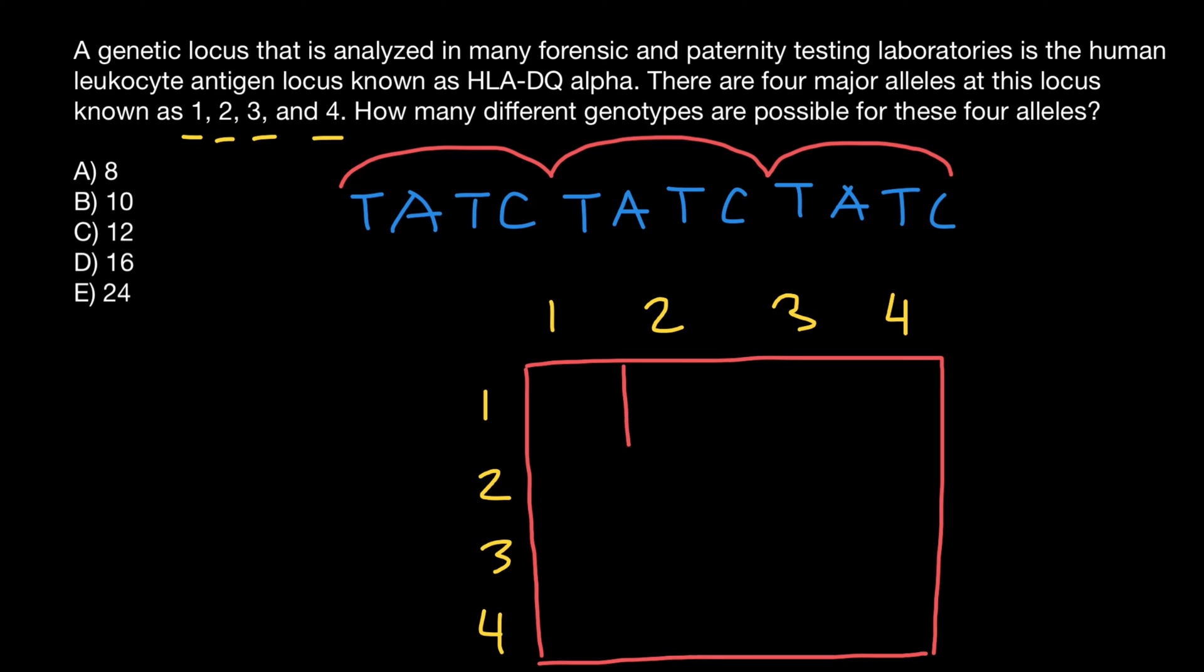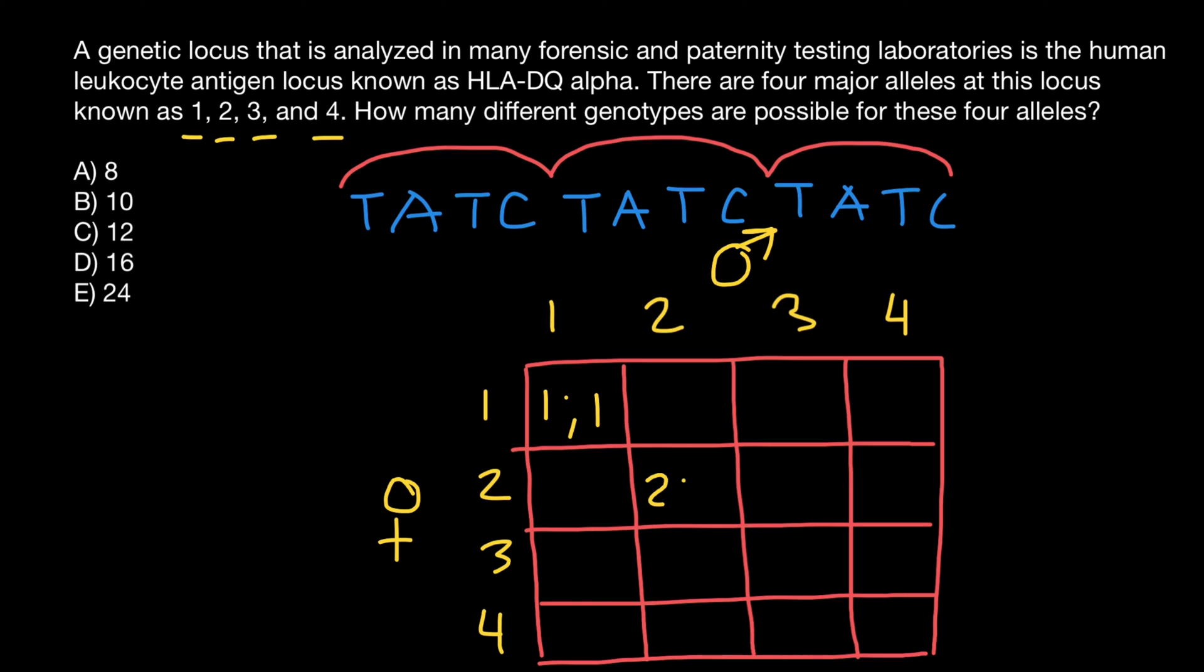And this Punnett square is going to represent all possible combinations. But don't think that there are 16 combinations, because we have here 16 cells. Take a look what's going to happen. One repeat inherited from the mother's side, and another one repeat inherited from the father's side. Here we may have two repeats inherited from the mother's side, and two repeats from the father's side. Three repeats from the mother's side, and three repeats from the father's side. Four and four here.